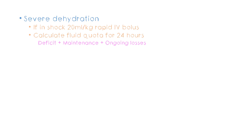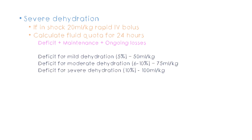Deficit is just what the name implies — how much water the baby is lacking to begin with. Maintenance is the amount of water the baby needs to maintain normal hydration within 24 hours, since we are calculating for 24 hours. Ongoing losses is what the baby loses again with episodes of diarrhea and vomiting. When you add up all these, you get the fluid quota needed to rehydrate the baby.